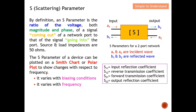Remember, for S-parameters we are not going to have short circuit or open circuit. Instead of a perfect short circuit or open circuit — which are very difficult to achieve at very high frequency — we use a 50-ohm load so that there will be no reflection and hence no a1 or a2 incident wave. The S-parameters of a device can also be plotted on a Smith chart or polar plot, which I may demonstrate later on.